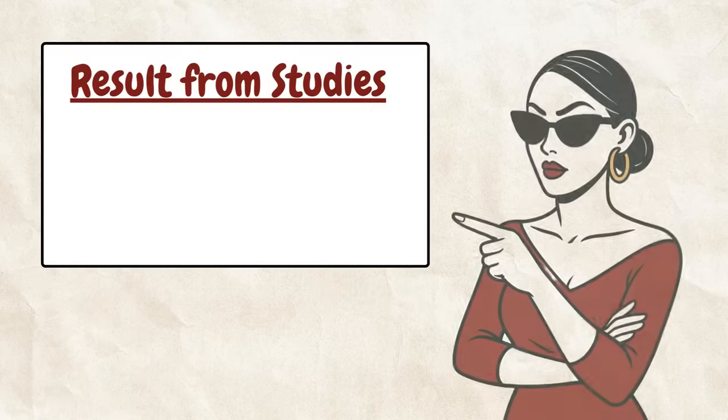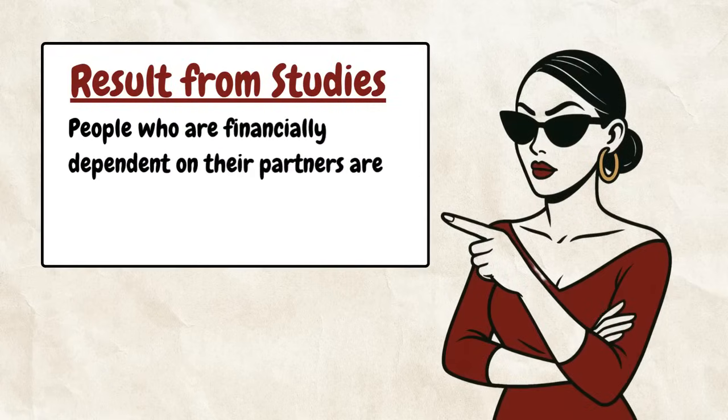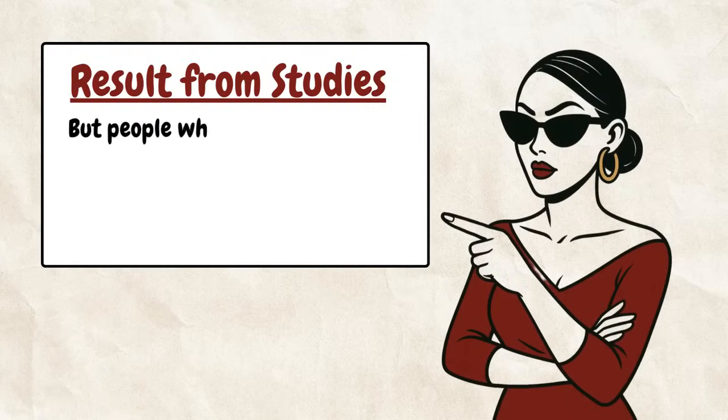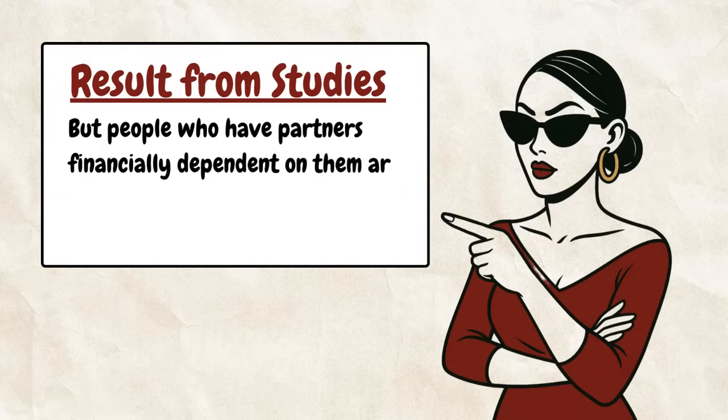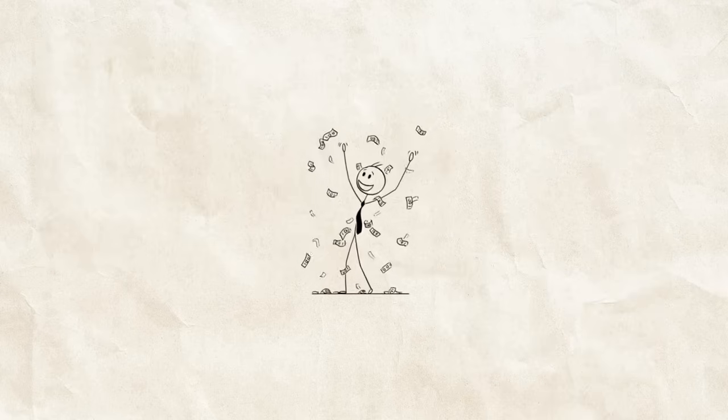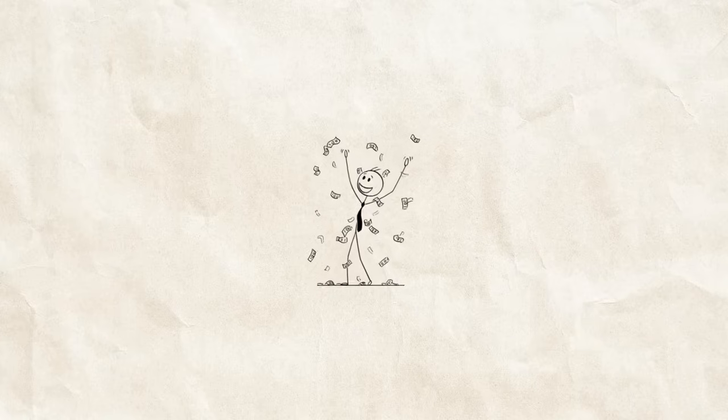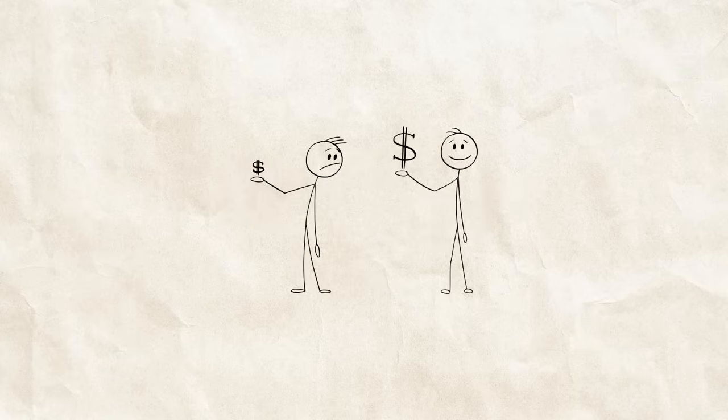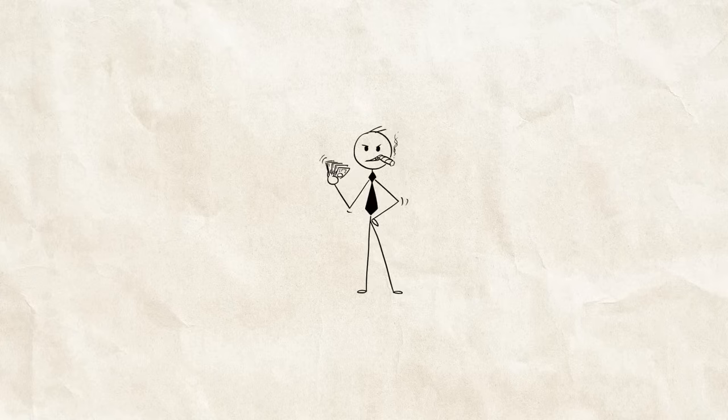Here's a pattern you should know about. People who are financially dependent on their partners are less likely to cheat. But people who have partners financially dependent on them are more likely to cheat. It's a fucked up power dynamic thing. So if your rich partner is flaunting their provider status, keep an eye out. They might think paying the bills buys them a hall pass for bad behavior.